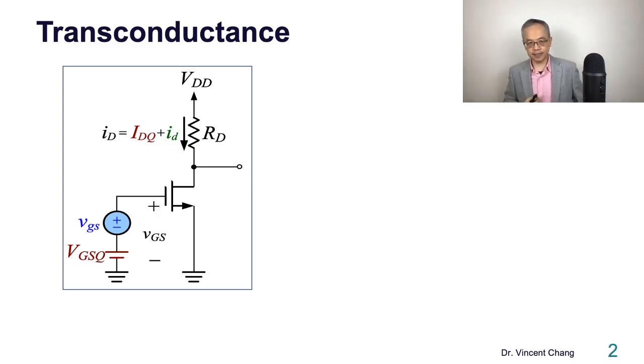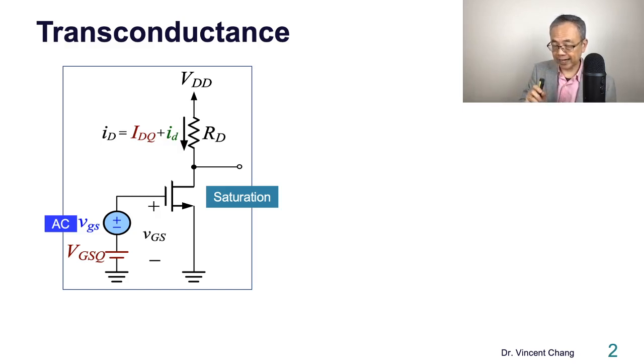The first one is transconductance. You see a MOSFET circuit, now assuming the MOSFET is in saturation region. First of all, make sure you can differentiate those three types of variables. Let's talk about the VGS. There are three types: the brown means the DC, and the blue means the AC, and the black lowercase variable with the capital subscript means the total instantaneous. It's the sum of the DC and AC.